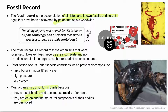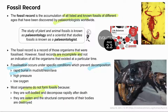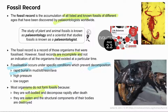Fossilisation occurs under specific conditions to prevent decomposition. Most fossils form in watery environments and in sedimentary rock. The first condition is rapid burial in mud, silt, resin, lava, or tar — quick burial prevents tissue decomposition, and sudden burial may be due to floods, mudslides, volcanic eruptions, or tree resin hardening into amber. High pressure also speeds up fossilisation by forcing minerals from groundwater into body tissues, depositing in spaces or replacing tissues entirely to form stone.